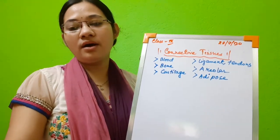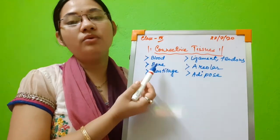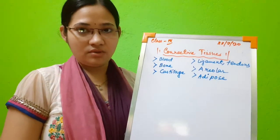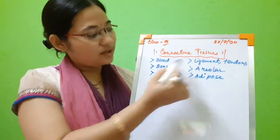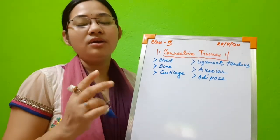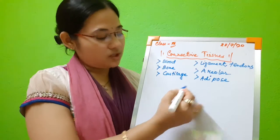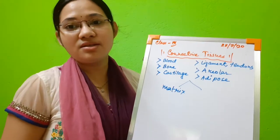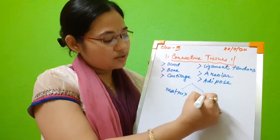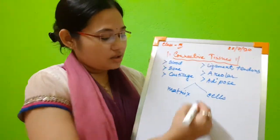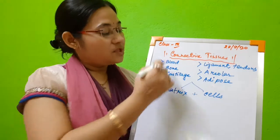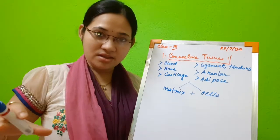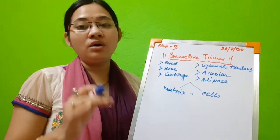In connective tissues there are different types: blood, bone, cartilage, ligament and tendons, areolar tissue, and adipose tissue. All these connective tissues have two important parts. All connective tissues consist of a matrix — that is the ground substance — in which the cells are suspended. So all connective tissues share the basic characteristic of being made up of a matrix in which cells are embedded.